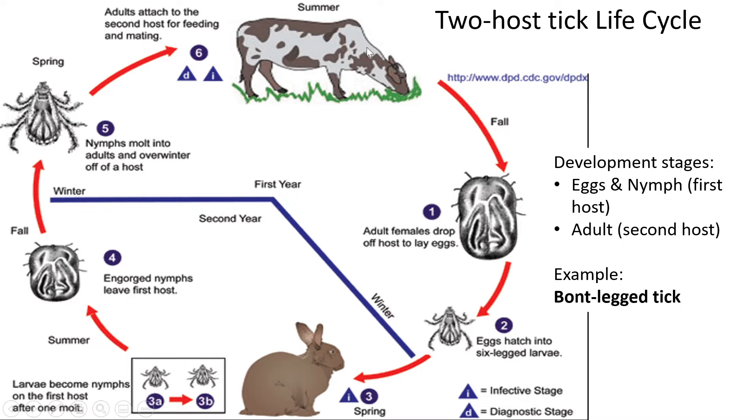So you have a main host and an intermediate host — basically two different species used at different times during the life of one tick.